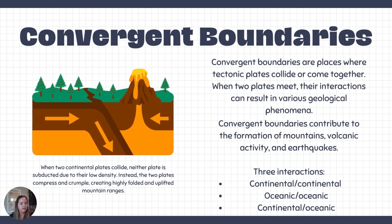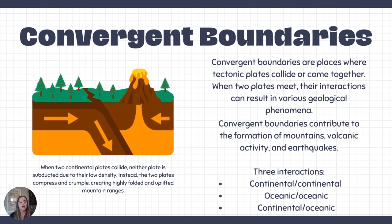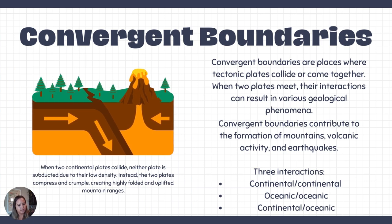With convergent plate boundaries, things get more complex because we have rocks running into each other with a lot of force. We're going to see intense earthquakes, volcanoes, and very tall mountain ranges. There are three types of interaction: continental-continental, oceanic-oceanic, or continental and oceanic plates running into each other.